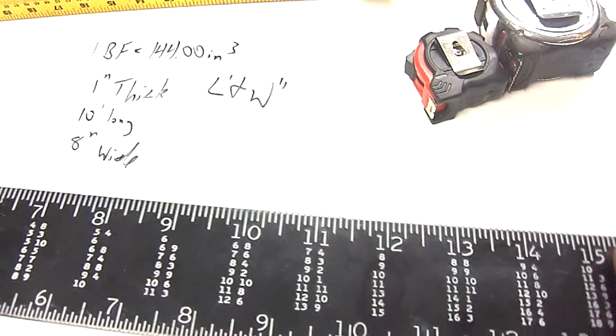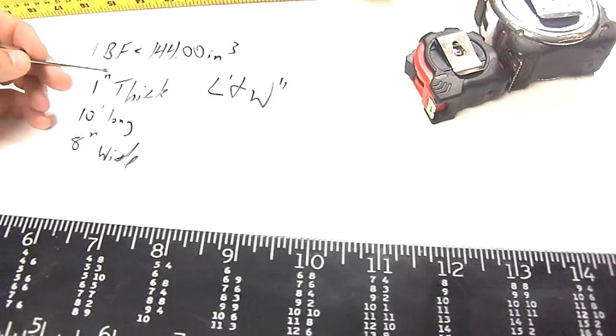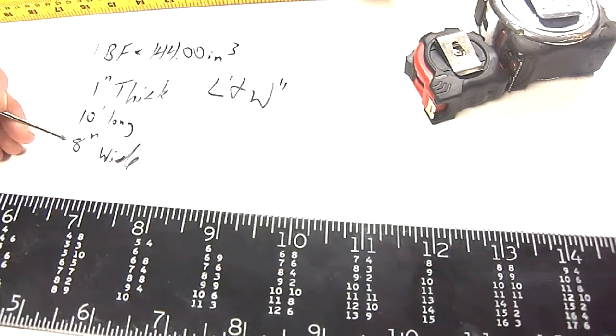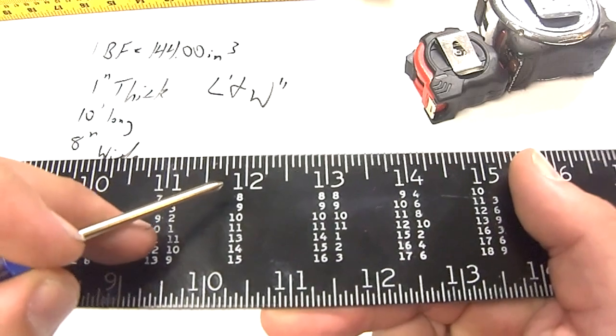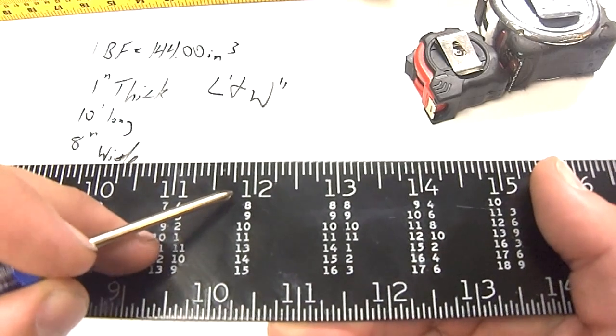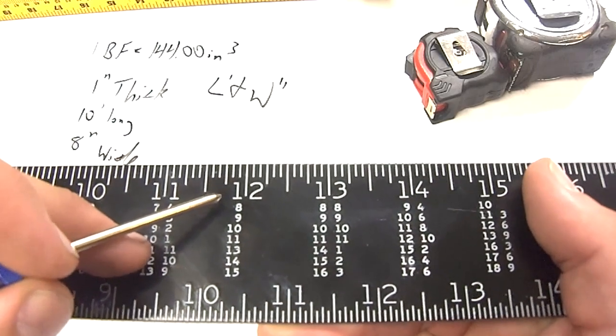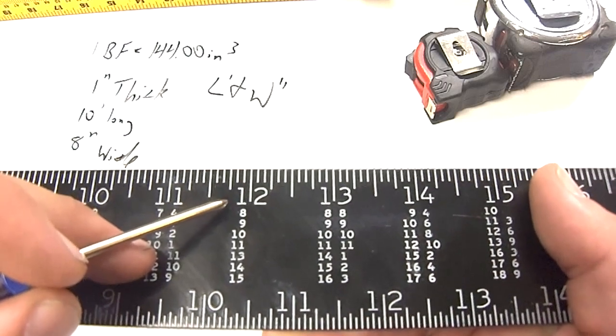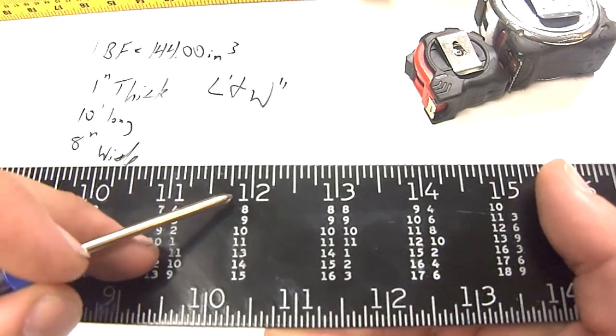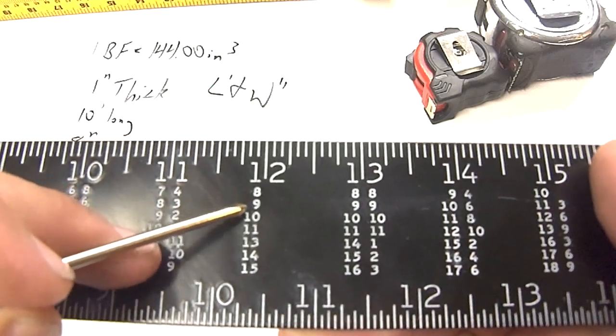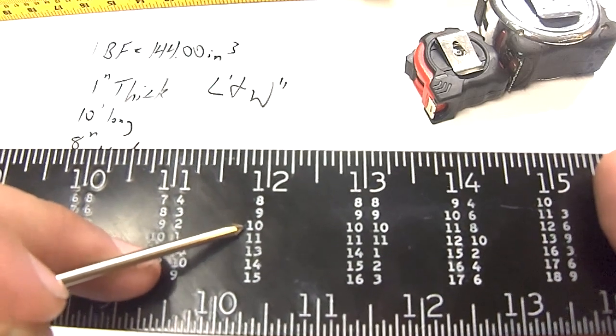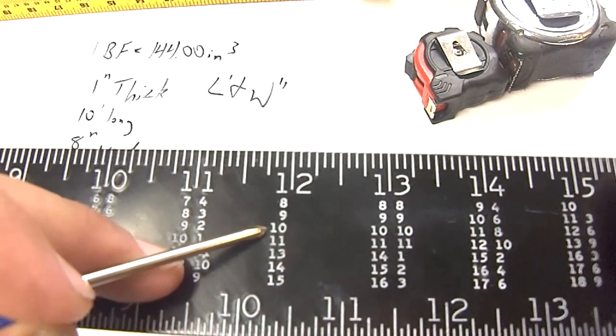Now, to figure this one out, I've got a problem written right up here. 1 inch thick, 10 feet long, 8 inches wide. Again, we'll start off at the 12. Again, this assumes that it is 1 inch thick. We're going to go to 10 feet long. Right here, the first 8, that's 8 feet long, 9 feet long, and then 10 feet long. The third one down.